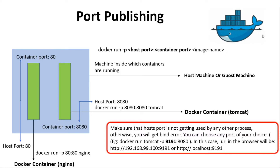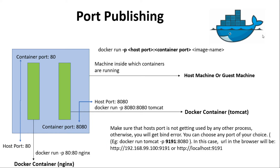You can choose any host port of your choice. For example, if you start the Docker container with host port 9191, then to access the Tomcat container from the browser, the URL you use should have port 9191 instead of 8080.